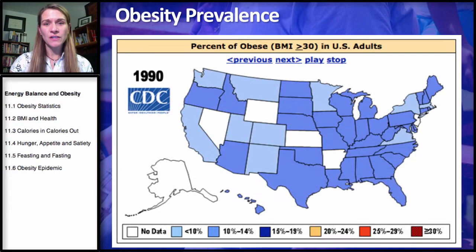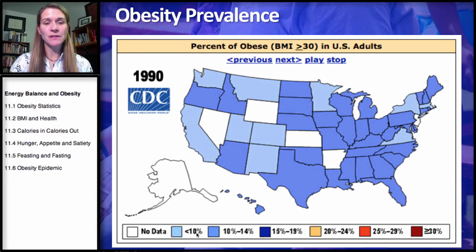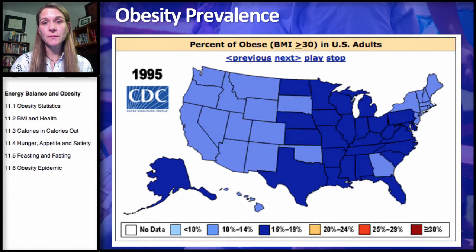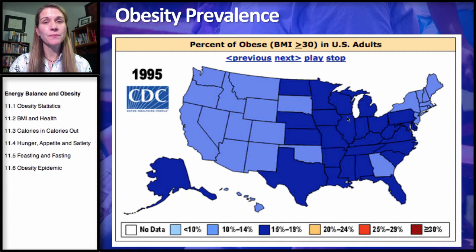As we click through to 1990, we're starting to see almost all states now have some obesity prevalence — partly due to more data being collected, but also reflecting an actual increase in obesity. By 1995, we do have states with 15% to 19% of the population obese, mostly throughout the Midwest and southern states.